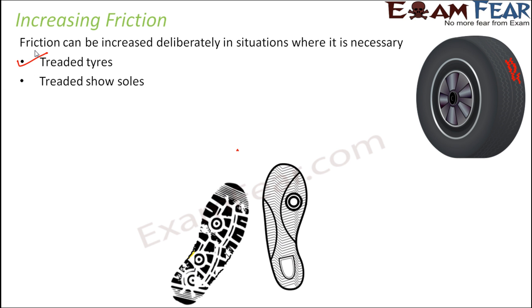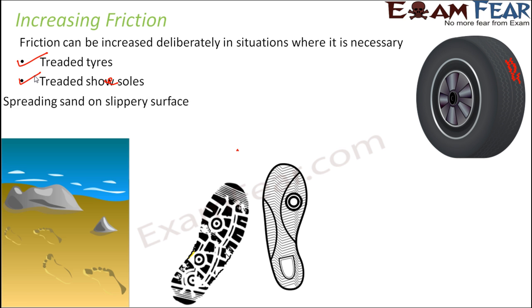Not only tires — you can look at your shoe soles, just the bottom of your shoe. If you see, there are some patterns or designs made on it, and it is made in such a way that the surface is not smooth. It is made rough so that it can have a better grip on the ground. This is also another way of increasing friction.